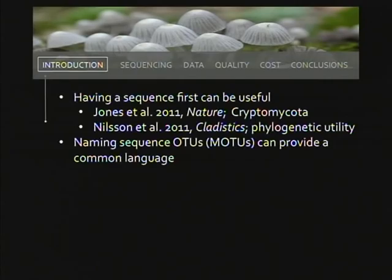But just having a sequence can be useful even without a formal identification. The Jones-Dell paper on Cryptomycota used sequences to build sequence-specific probes that they then used to probe environmental samples until they found the organism attached to that sequence — so having the sequence helped them find the critter. And Nielsen-Dell's cladistics study showed that putting unidentified ITS sequences into a phylogenetic tree really changed the topology of the groups they were examining. So these sequences, even if we don't know what they are, are useful.